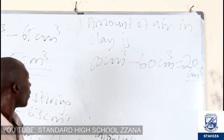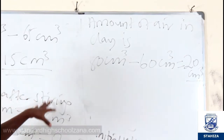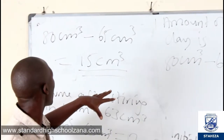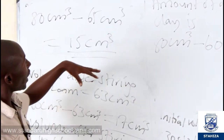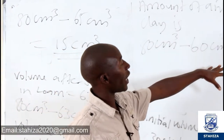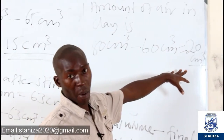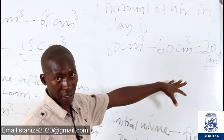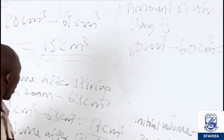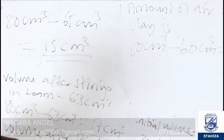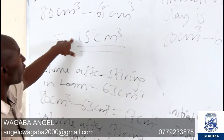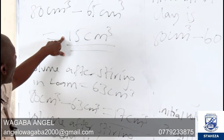Meaning that of all three soil types, we are seeing that clay has the highest amount of air. The one which had the least amount of air was sand.